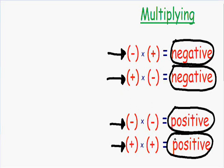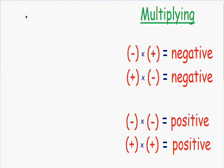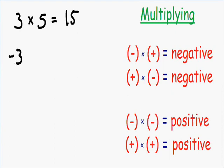So those are all the different possibilities you need to know before getting started on examples. Let's start with an easy one: positive 3 multiplied by positive 5. You probably already know how to multiply positive numbers — positive 3 times positive 5 is equal to positive 15.